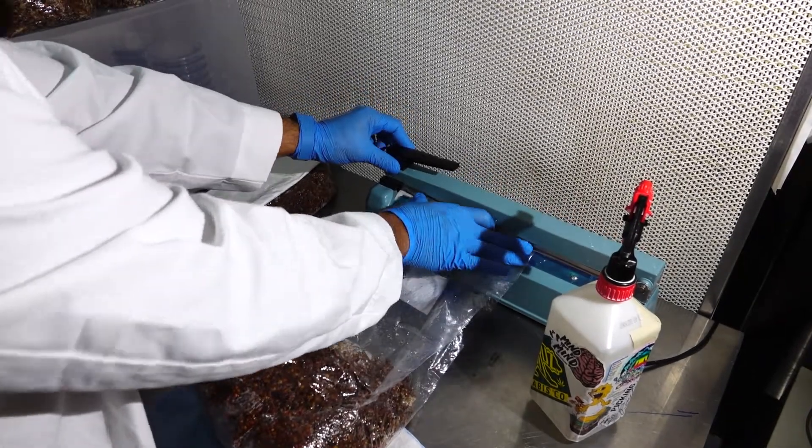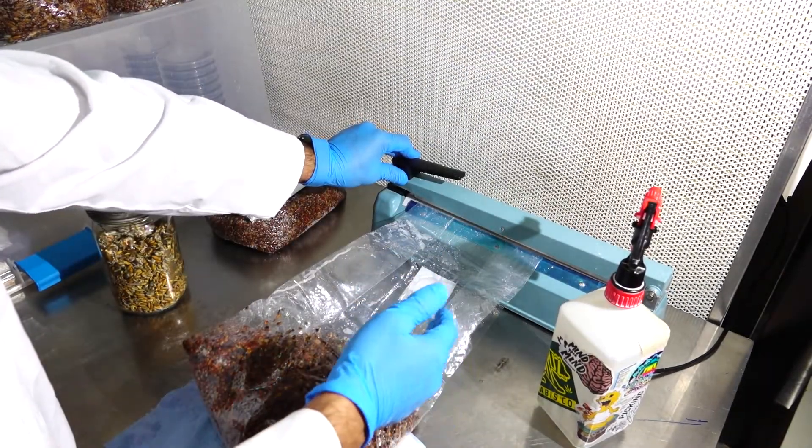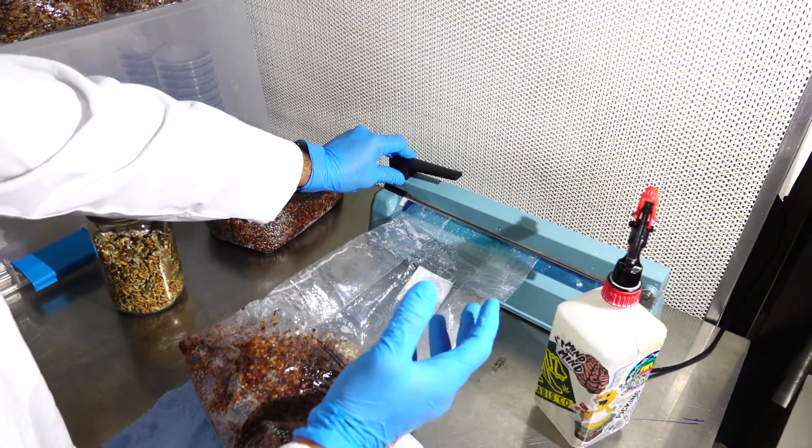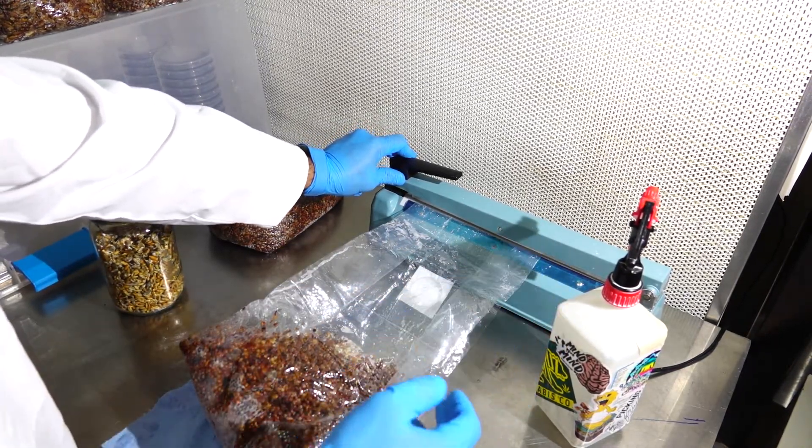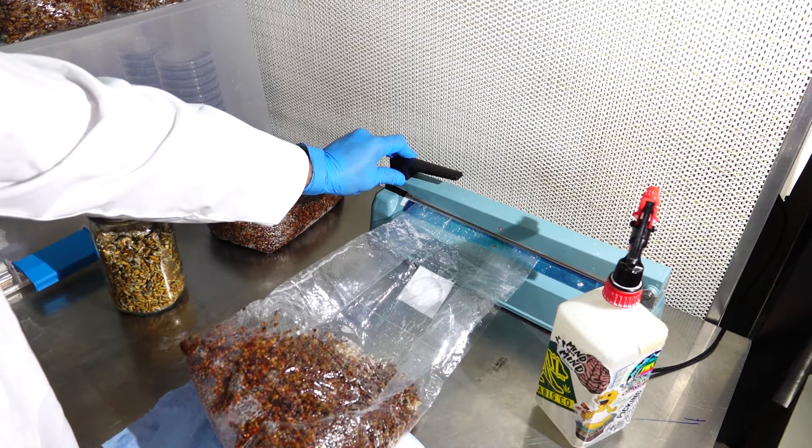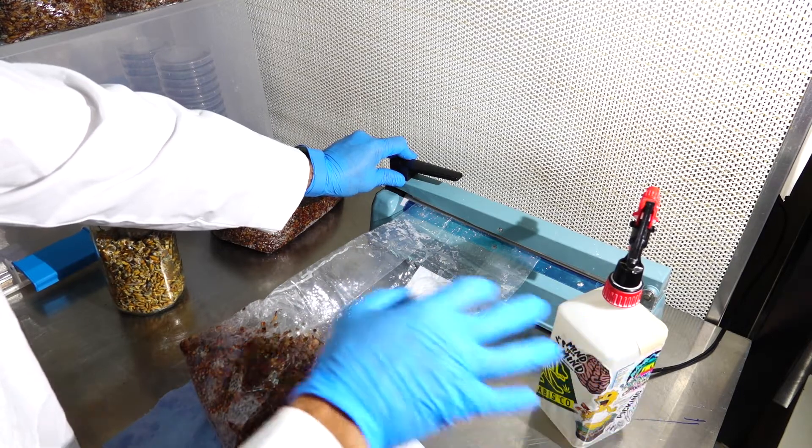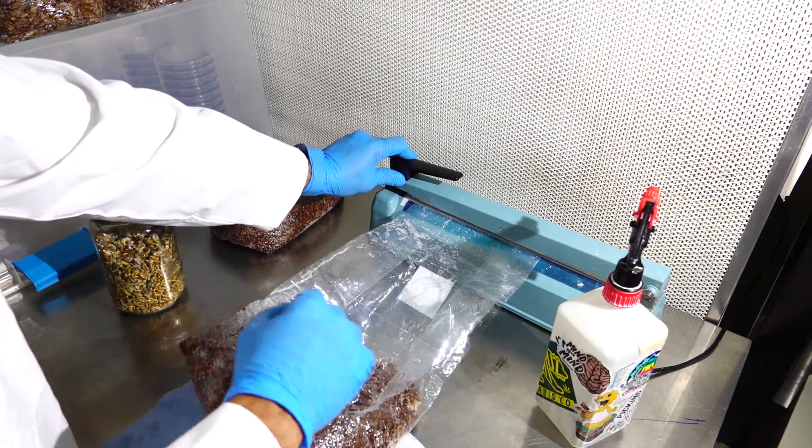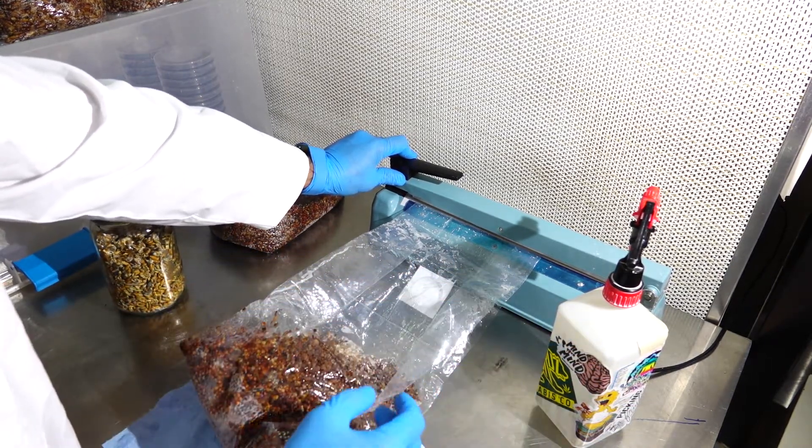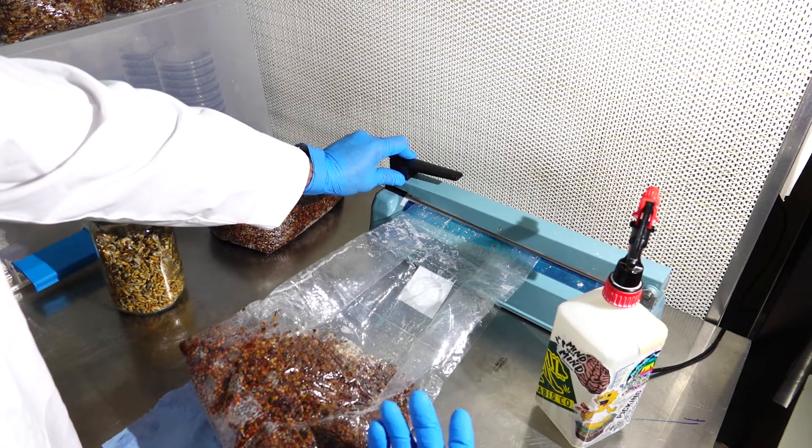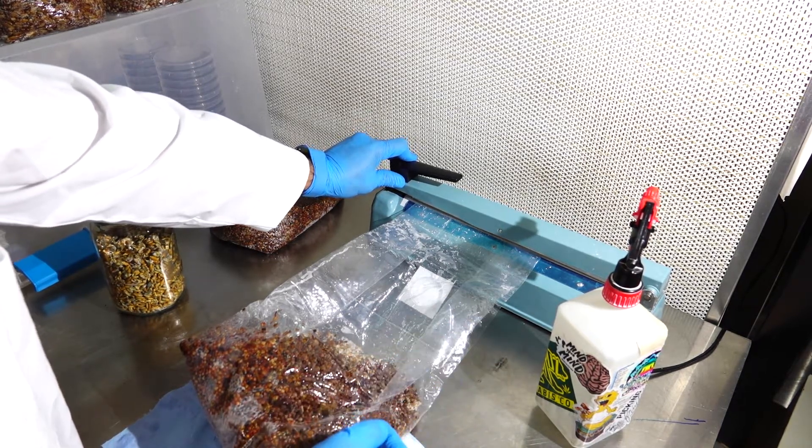Now if you don't have access to a flow hood and an impulse sealer, you can try to do this in a freshly sanitized bathroom or a very small space with no open windows and no air flow coming into the room. You also want to make sure that you bleach everything down, isopropyl everything down, clean all surfaces, clean your hands. You can also do this naked if you're afraid of having lint or animal dander end up on your freshly sterilized grains.